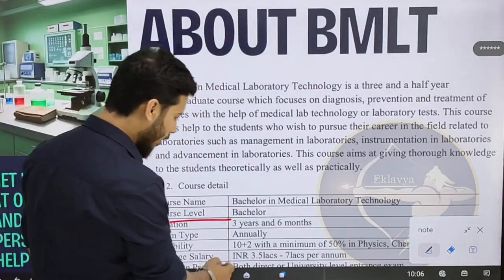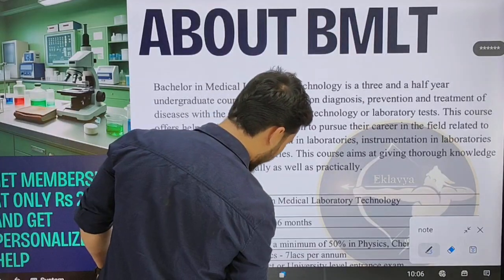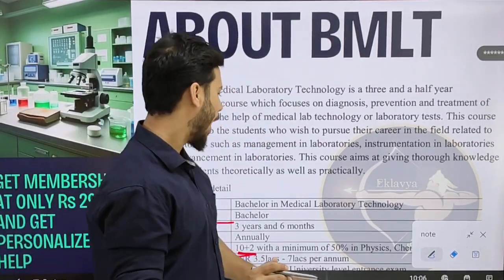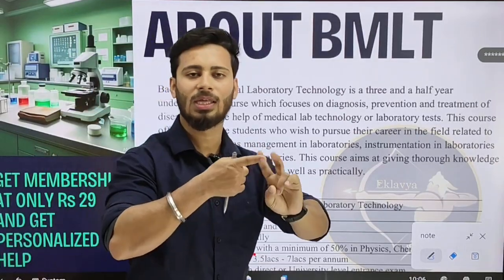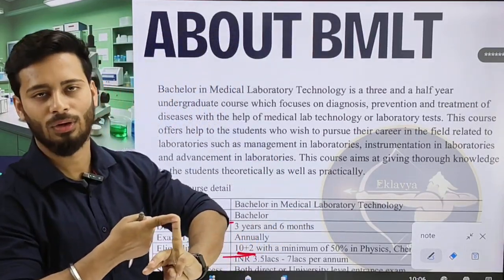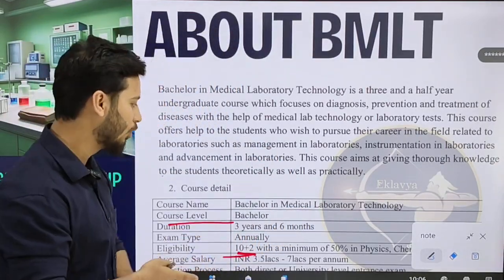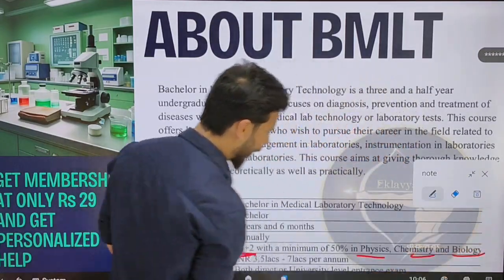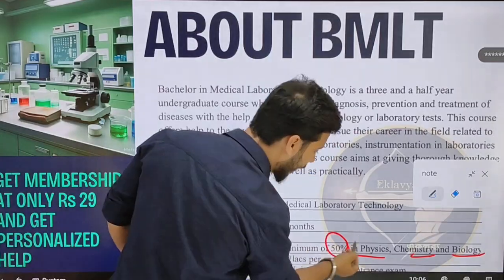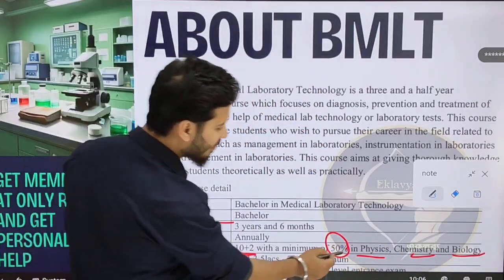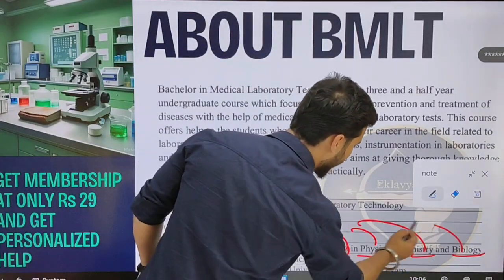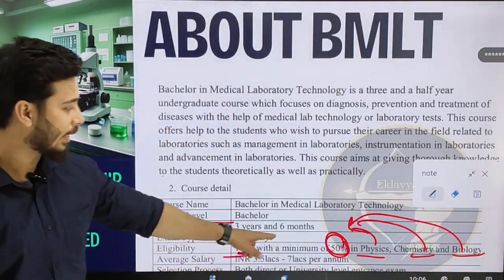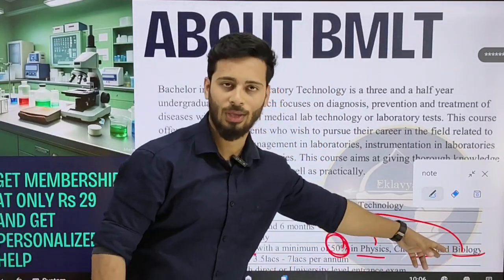Eligibility number 1: you must have completed 10+2, which means Class 12. The subjects Physics, Chemistry, and Biology are not strictly mandatory, but you must have these as compulsory subjects. In Physics, Chemistry, and Biology individually, you need at least 50 percent in each subject.